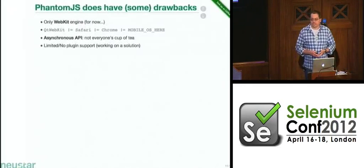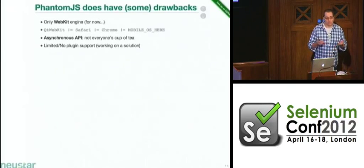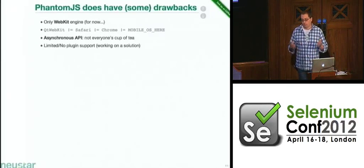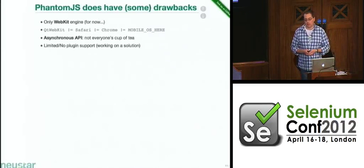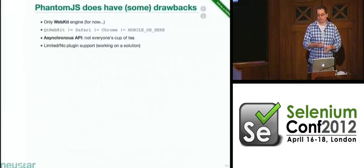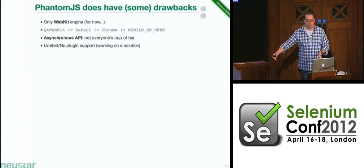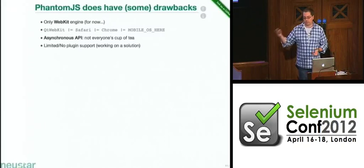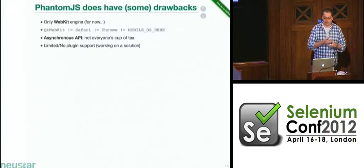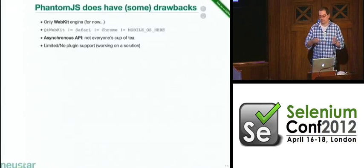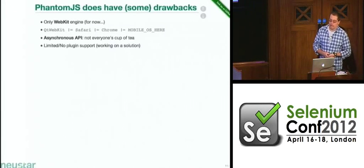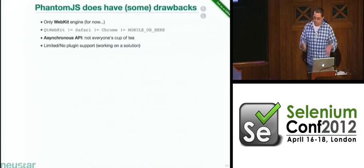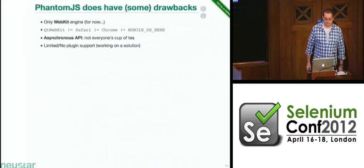PhantomJS does come with some drawbacks. The most important is that it's only one WebKit engine. While WebKit is the same base, if you've ever tried to build WebKit from source code, you can tune it to do whatever you want — turn features on and off. So ultimately you have a Qt WebKit that is slightly different from Safari, slightly different from Chrome, and most importantly different from the various mobile WebKit variants. There are a lot of inconsistencies, particularly when using advanced features. Also, a lot of people don't like the asynchronous API, but this is JavaScript.